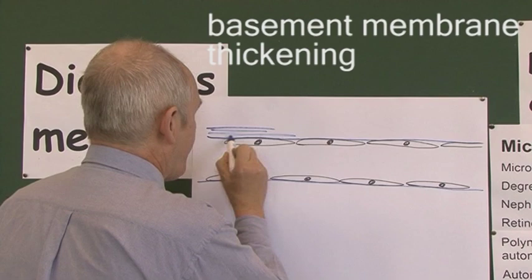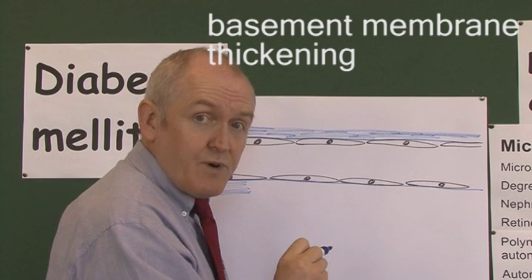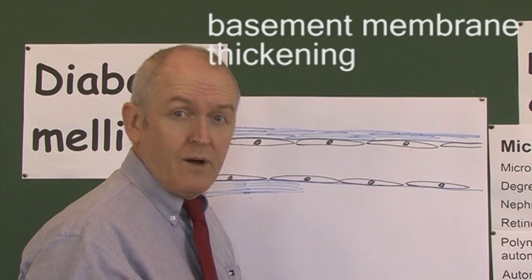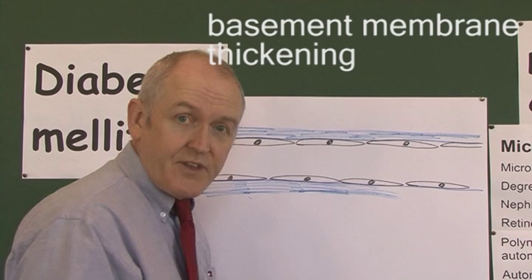So the basement membrane changes from being nice and thin. It thickens. And this is associated with hyperglycemia, with high blood sugar levels. The higher the sugar is, and the longer it is high for, the worse this is likely to develop. So the worst possible combination for getting this microvascular basement membrane thickening is very high blood sugar levels over long periods of time.